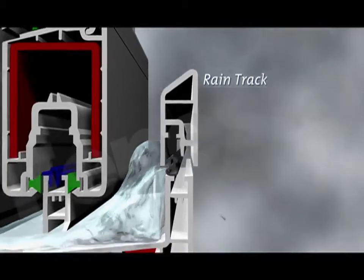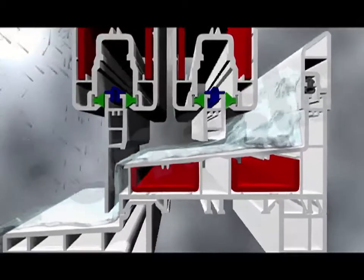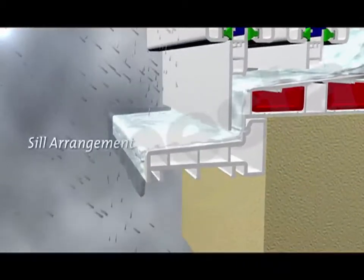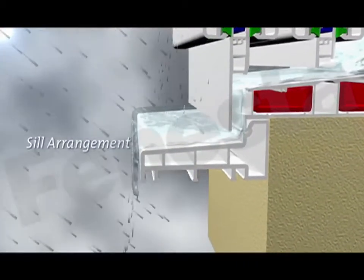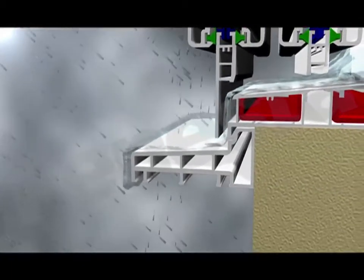Then there's the sill arrangement, useful in areas that receive small amounts of rain. The arrangement resists air pressure, making sure the rain flows out instead of in, at some distance from the facade without staining the walls.